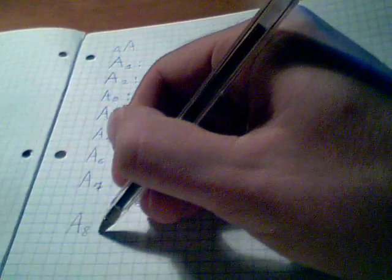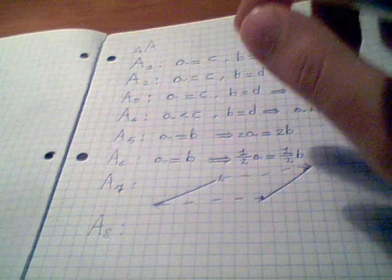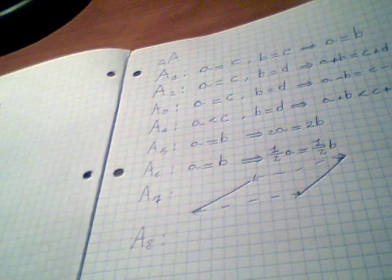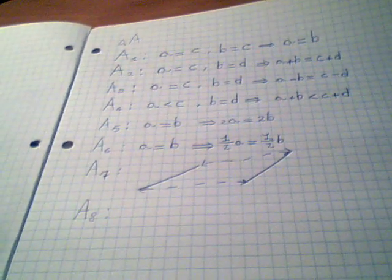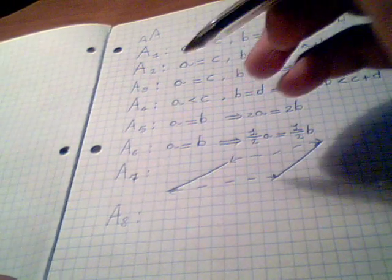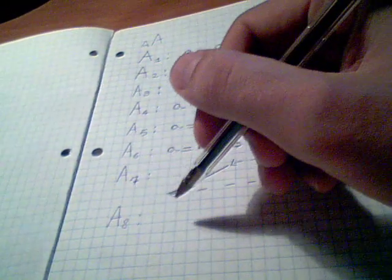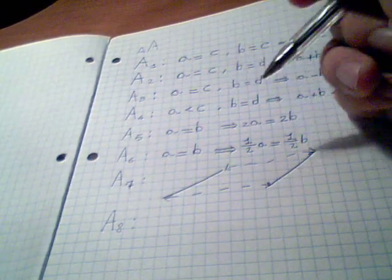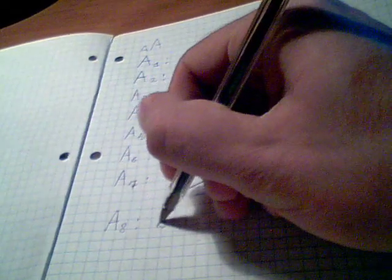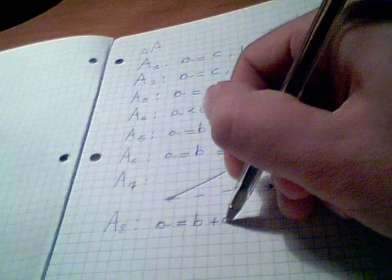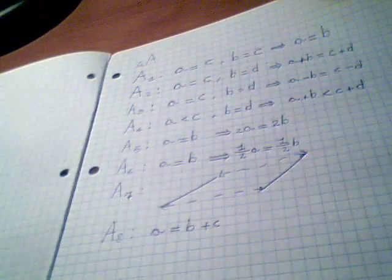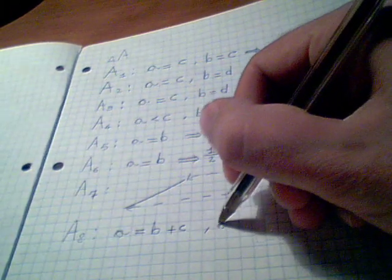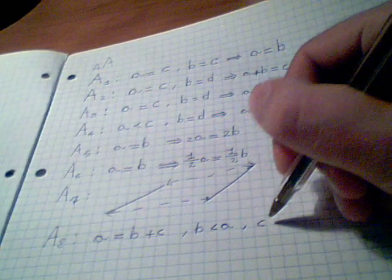Axiom number 8 is a very famous one, probably one of the most famous ones. And it says that the whole thing is more than a part of it. If A is equal to B plus C, then B would be less than A and C would be less than A.